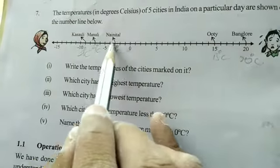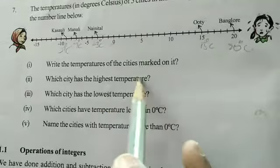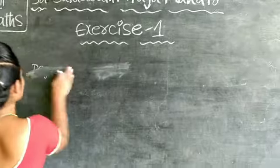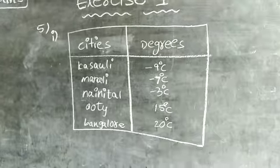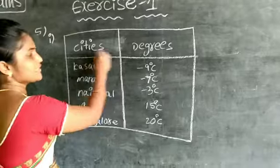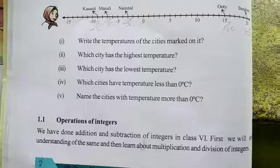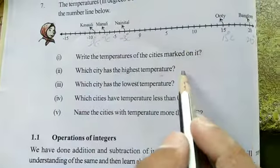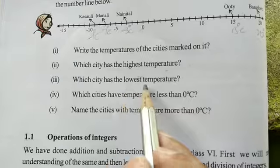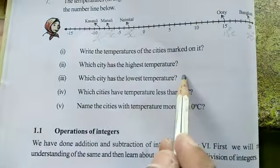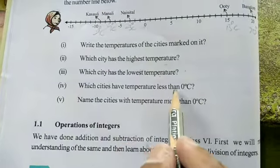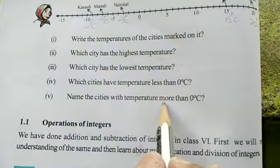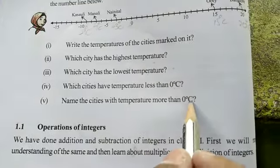Write the temperatures of the cities marked on the number line. Which city has the highest temperature? That is homework. Which city has the lowest temperature? Which city has a temperature less than 0 degrees? Which city has a temperature more than 0 degrees centigrade? That is the homework.